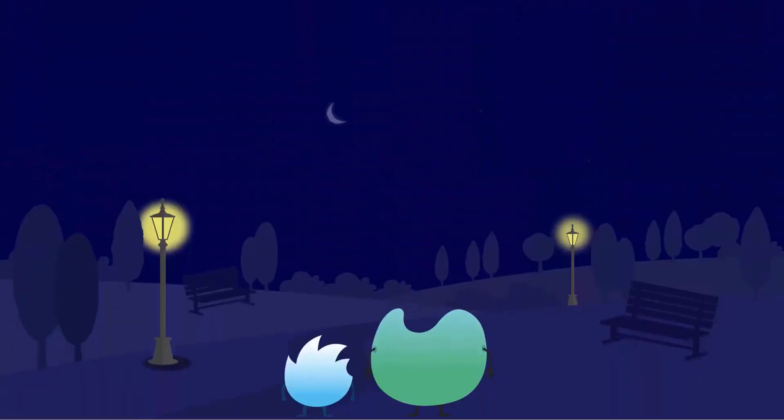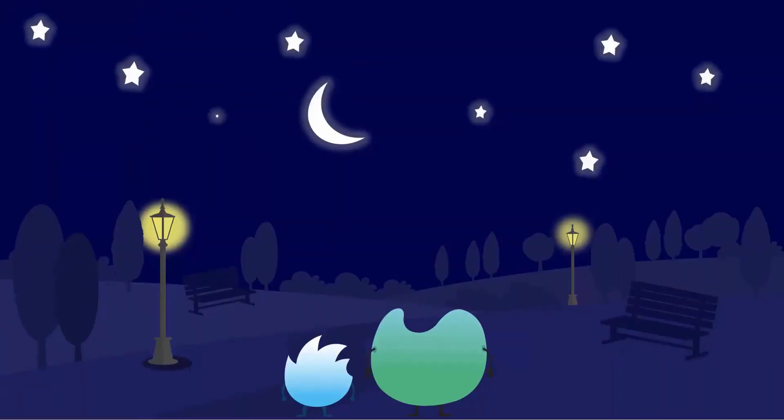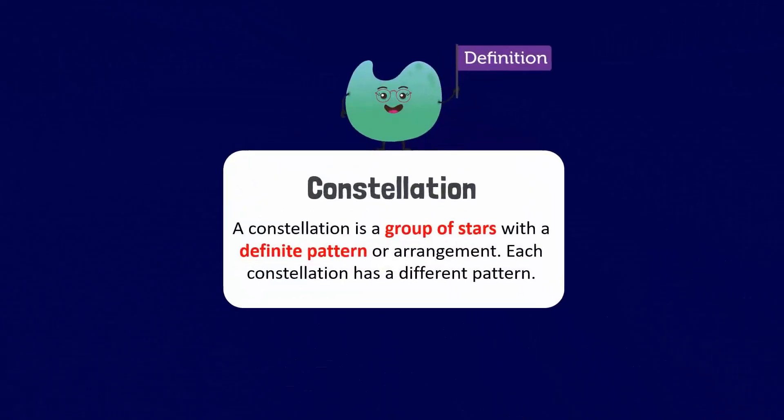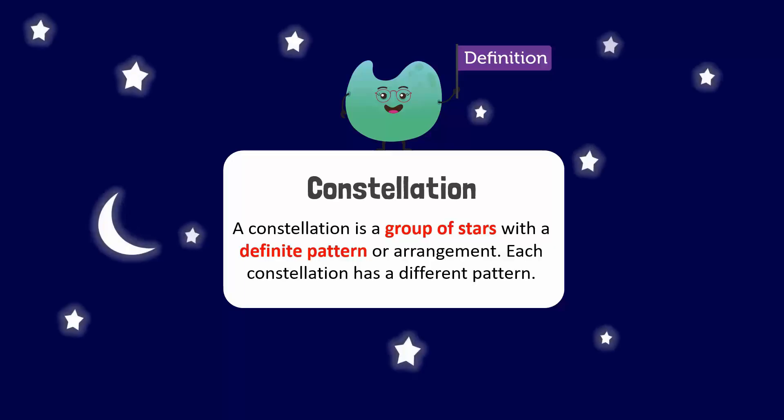Now let's look at stars. We can make patterns out of stars in the sky. These patterns are called constellations. A constellation is a group of stars with a definite pattern or arrangement. Each constellation has a different pattern.